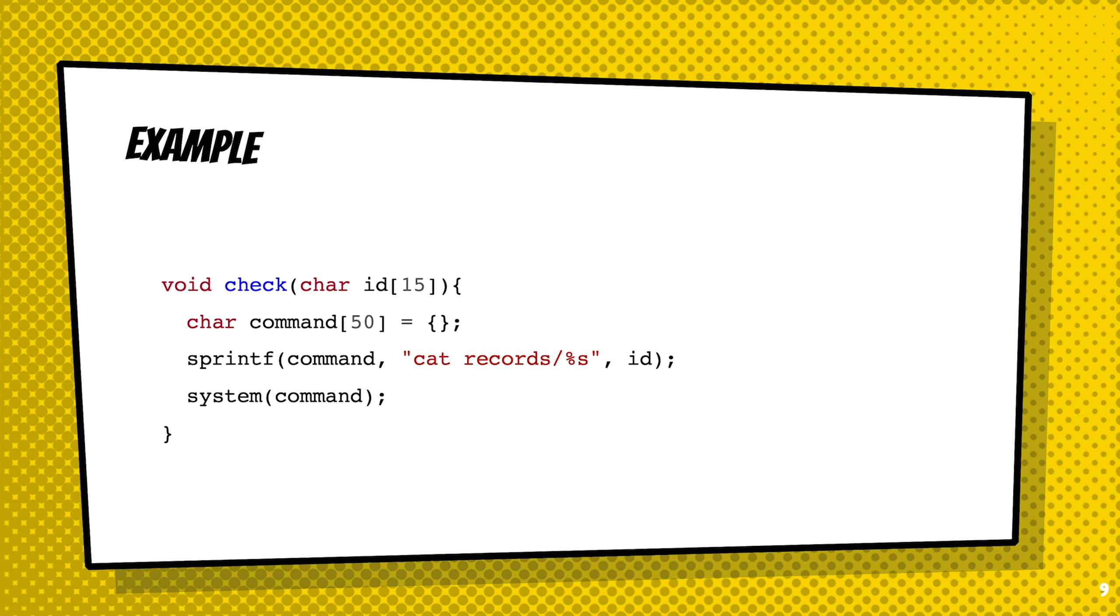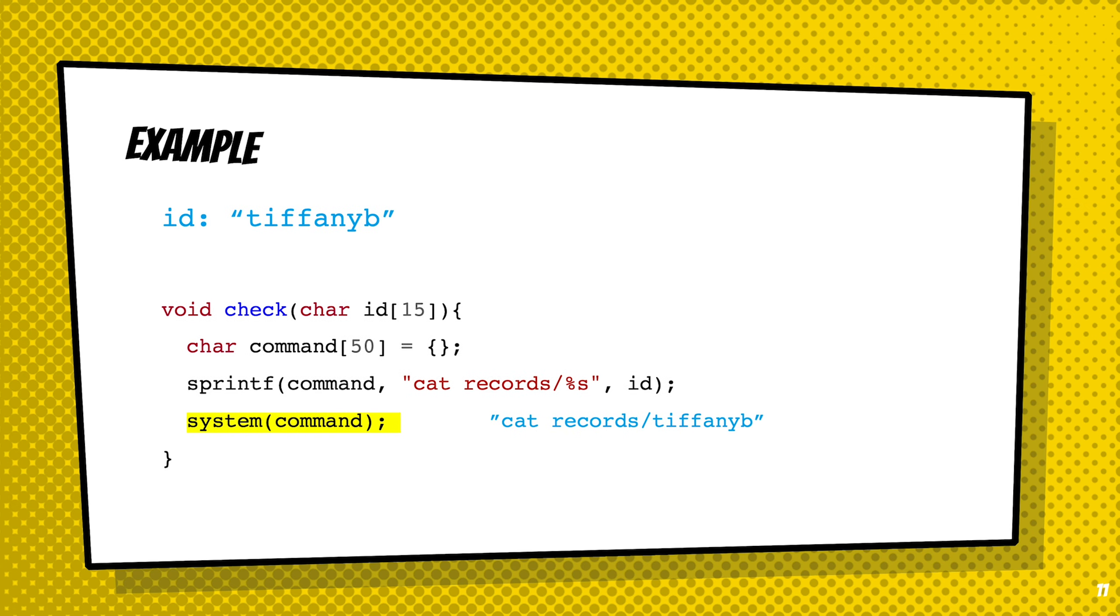This code is vulnerable to command line injection because of the function system. If we call check with a proper ID such as TiffanyB, we will be able to call system to execute the command of cat records/TiffanyB.